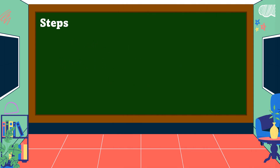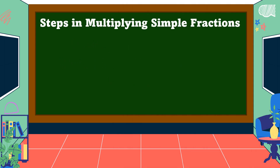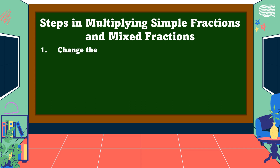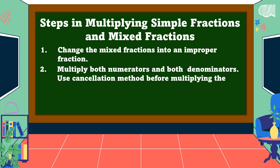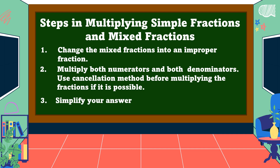These are the steps in multiplying simple fractions and mixed fractions. Number one: change the mixed fractions into an improper fraction. Number two: multiply both numerators and both denominators — use the cancellation method before multiplying the fractions if it is possible. Number three: simplify your answer to its lowest term whenever possible.